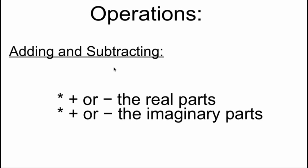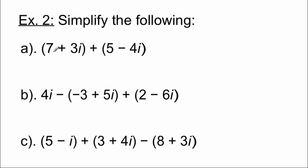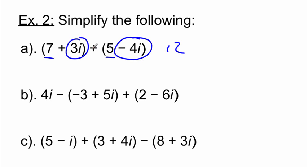We're going to start doing operations with complex numbers, beginning with adding and subtracting — we can treat it just like combining like terms. We add or subtract the real pieces, and then we add or subtract the imaginary pieces, treating the i's almost like a normal variable. In example a, we take seven plus three i and add five minus four i. The real pieces: seven plus five is 12. The imaginary pieces: three i plus negative four i is negative one i. So the result is 12 minus i.